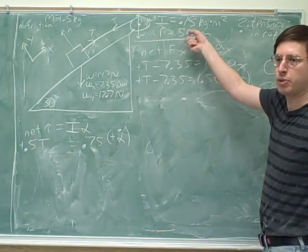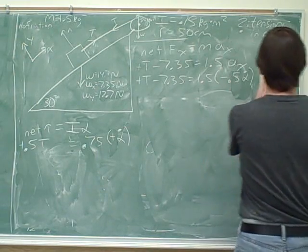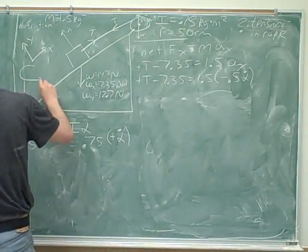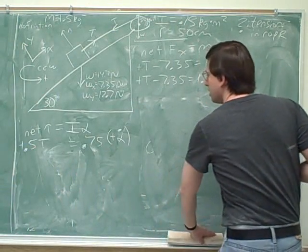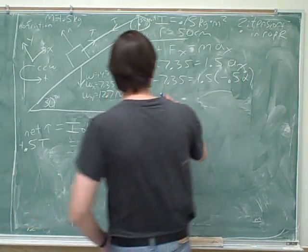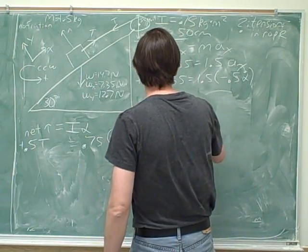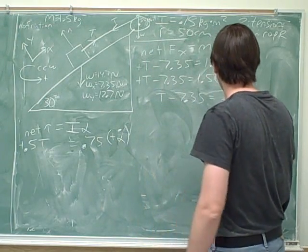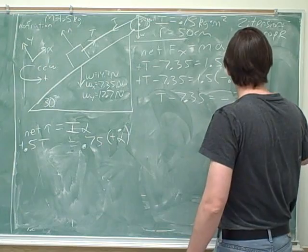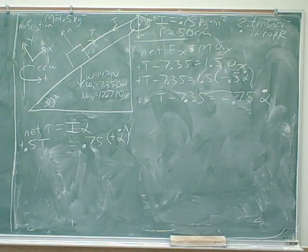We know what R is: R was 0.5, so I can put that in over here. Then you did your calculation — good. I can solve this equation and put it in this other equation, or I can solve it directly in the equation.